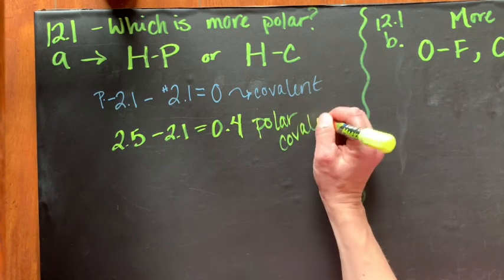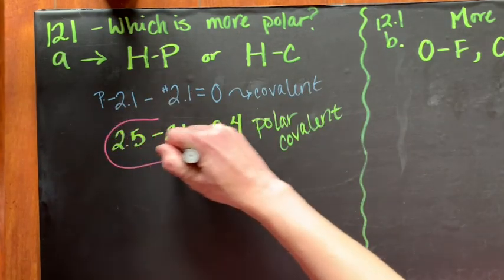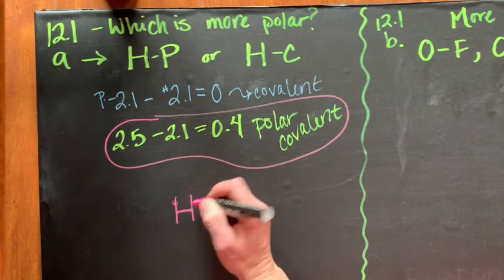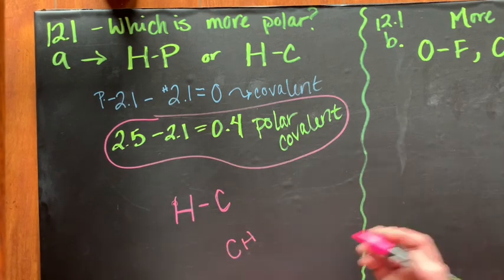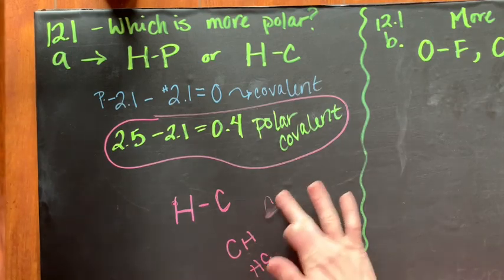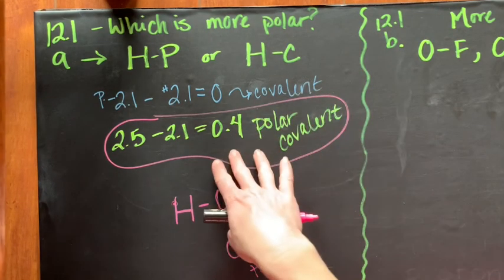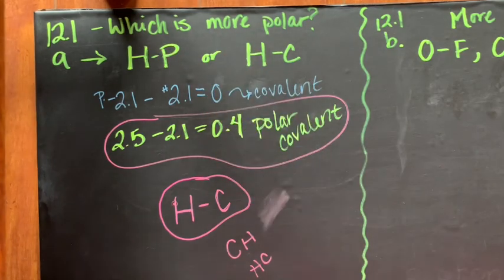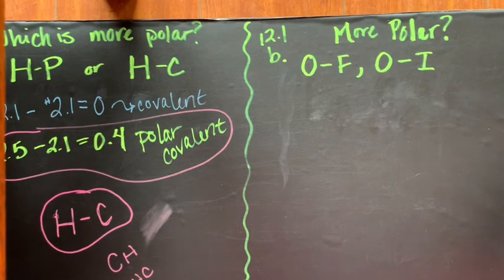Looking at these values, we have a much larger value for hydrogen and carbon. The larger the difference, the more polar the bond, so hydrogen and carbon is more polar. This doesn't mean the formula is simply CH — it just means that any bond between carbon and hydrogen will be more polar than one between hydrogen and phosphorus.